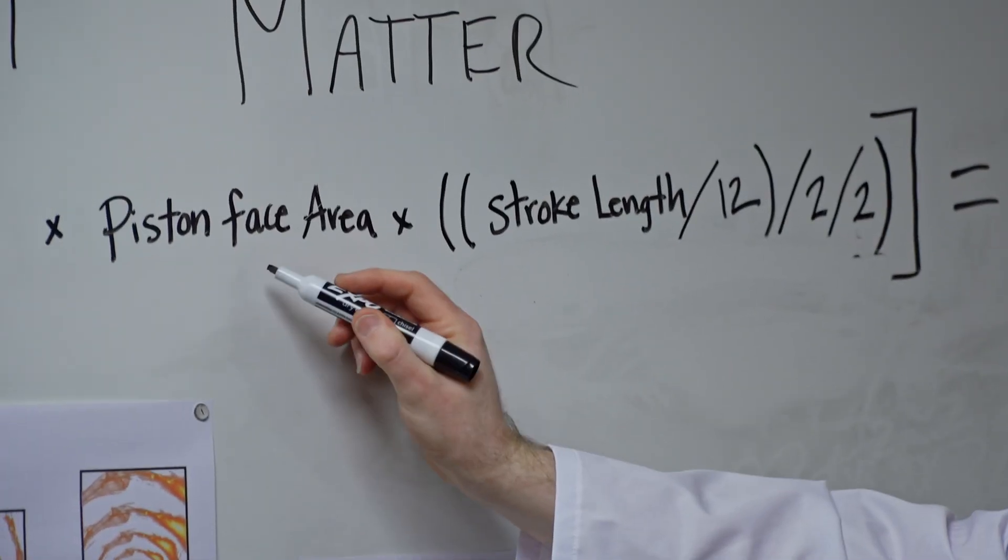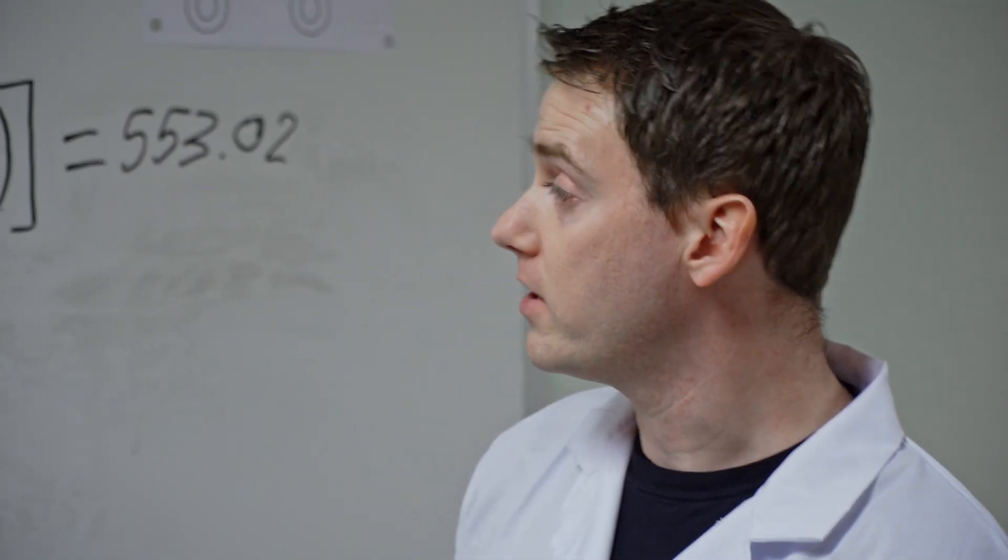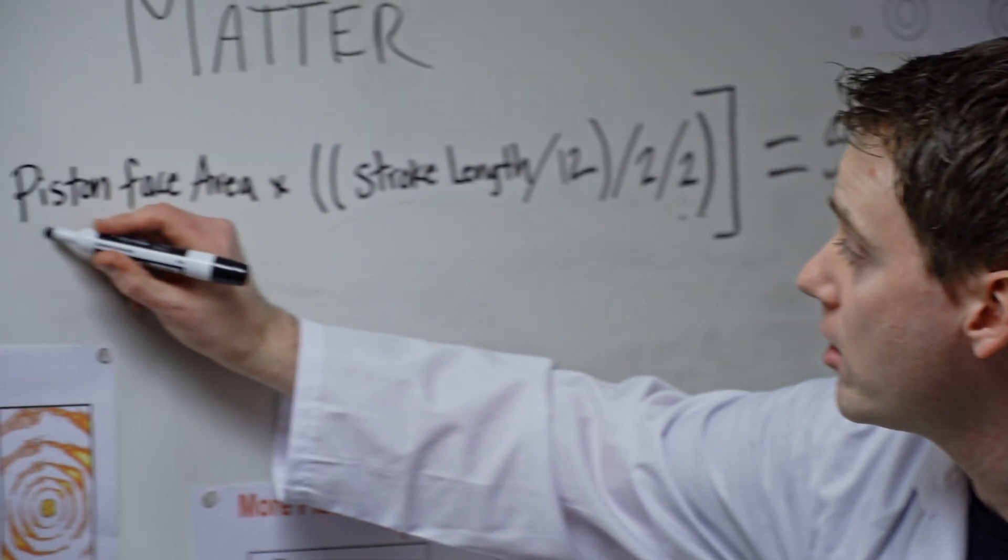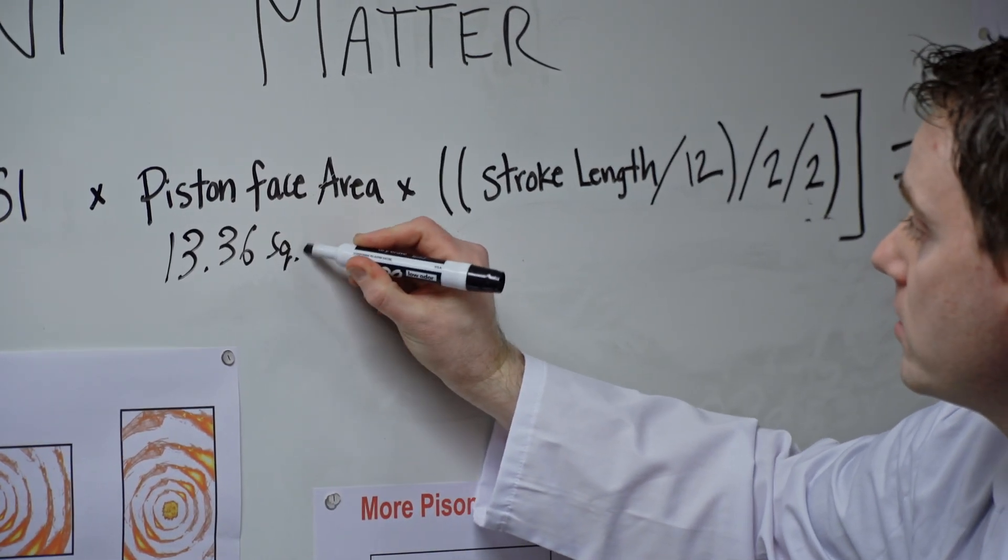But our piston face area is going to change because now we've got a smaller bore. And on a 4 and an eighth inch bore, that is going to be 13.36 square inches.